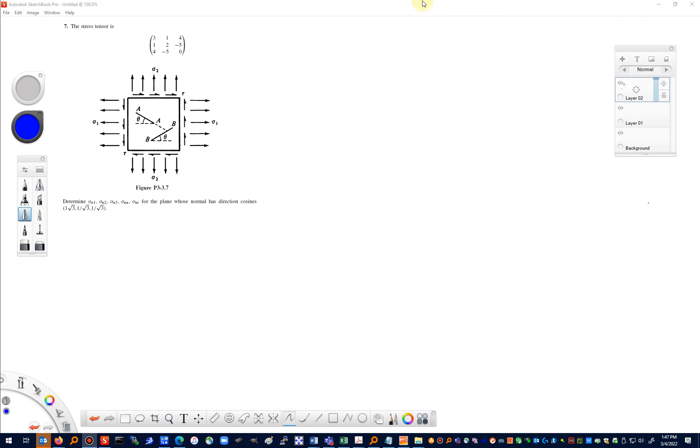This is problem 3.3-7 from our elasticity text, third edition. Before I get started on this, I do want to note that there is a problem in the statement of this question. It says determine the following quantities for a plane whose normal has direction cosines.